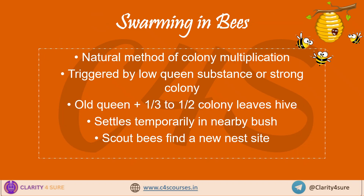Next is swarming in bees, which is a very important phenomenon in bee society. Swarming is like a bee colony giving birth to a new colony — it's a natural method of colony multiplication. When the colony gets crowded or the queen substance gets low, some bees including the old queen decide to leave and start a new home. First, the colony makes new queen cells. Then the old queen takes off with some worker bees. They rest in a bush while scout bees go and find a new location. This group is called the primary swarm.